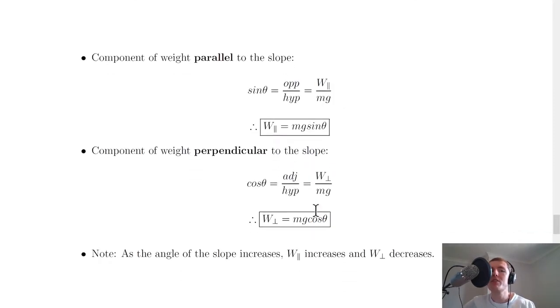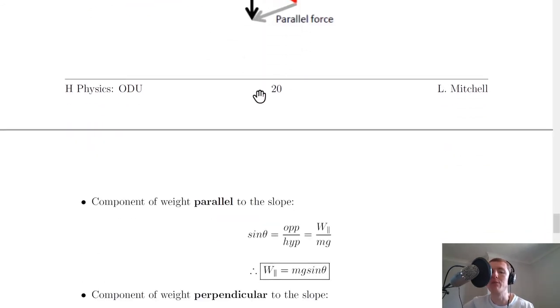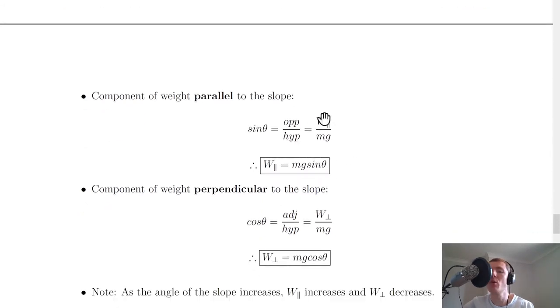If we want to consider the component of weight parallel to the slope, looking at the triangle we want an expression for this side. We know this is mg and we have angle θ. Sine θ equals opposite over hypotenuse, so that gives us sine θ equals the parallel force over mg.